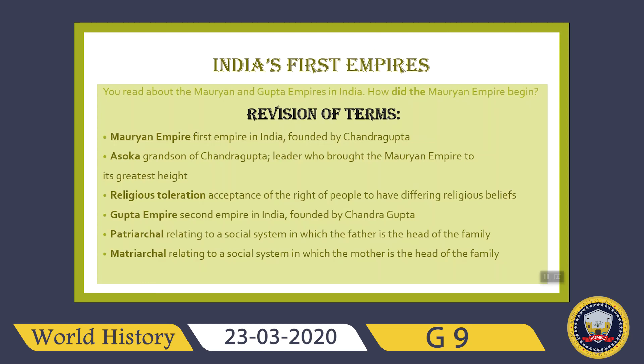I will quickly revise the terms, and the rest you will see in your books. India's first empire — what we read in this chapter was the Mauryan and Gupta Empires in India and how the Mauryan Empire began. The Mauryan Empire was the first empire in India, founded by Chandragupta. Ashoka was a grandson of Chandragupta and a leader who brought the Mauryan Empire to its greatest height.